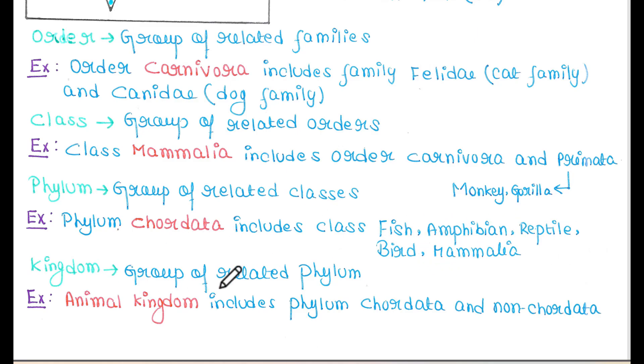Kingdom - a group of related phylum. The animal kingdom includes phylum Chordata and phylum non-Chordata.